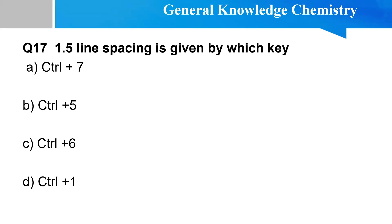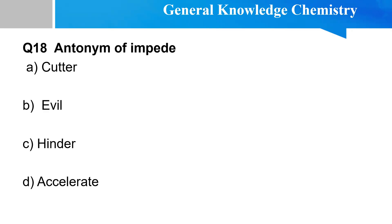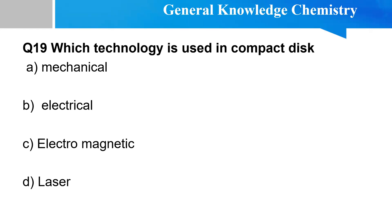1.5 line spacing — which key is used to give 1.5 line spacing? Next MCQ: Which technology is used in a compact disk? Options: mechanical, electrical, electromagnetic, and laser. Laser is the technology used in the compact disk.